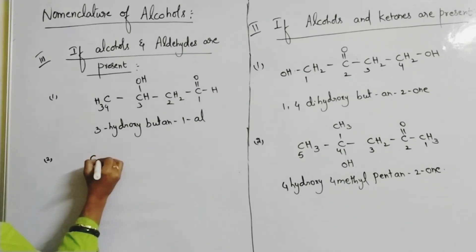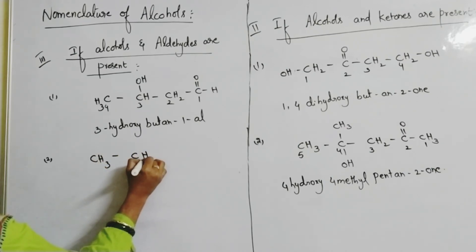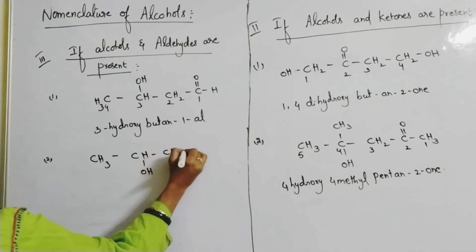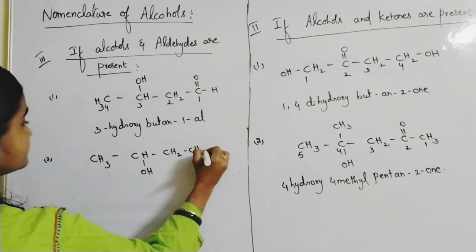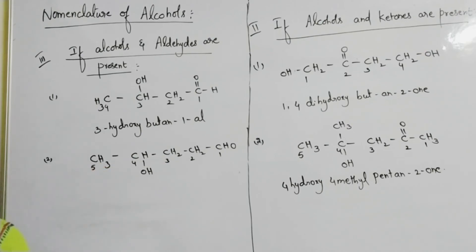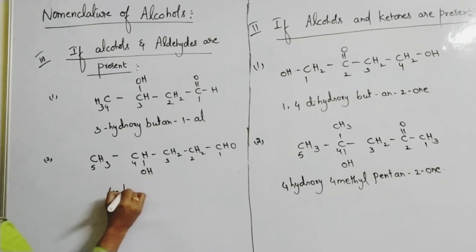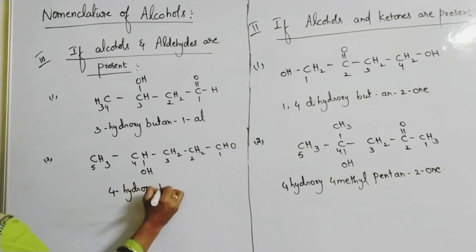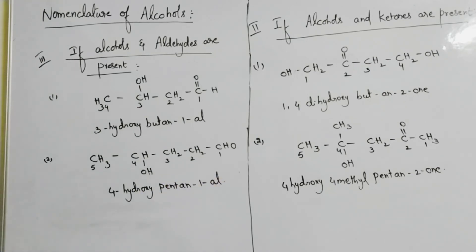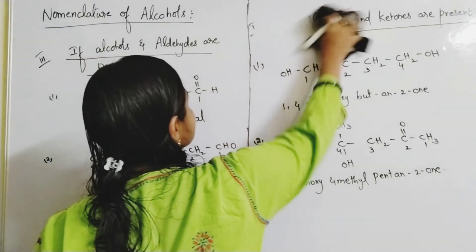Example 2 for aldehyde and alcohol: CH₃–CHOH–CH₂–CH₂–CHO. Numbering from the aldehyde: position 1 (CHO), 2, 3, 4, 5. OH is at position 4 and there are five carbons. The name is 4-hydroxypentan-1-al.